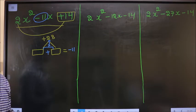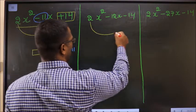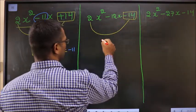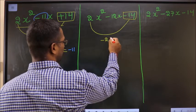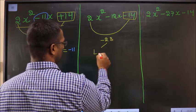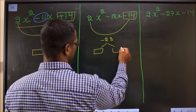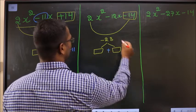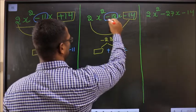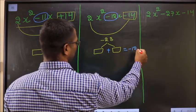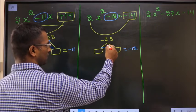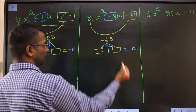For the second expression, multiply the leading coefficient with the constant: 2 × (-14) = -28. Now look for two numbers such that when you add them you get the middle number, minus 12, and when you multiply them you get minus 28.